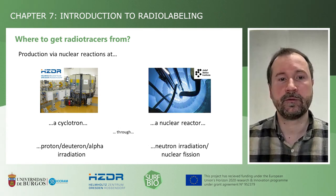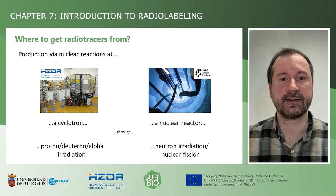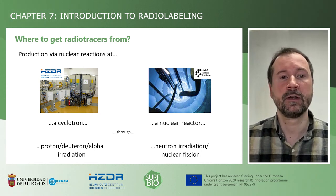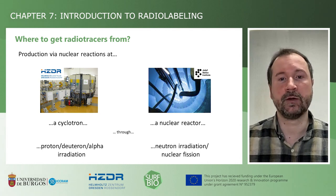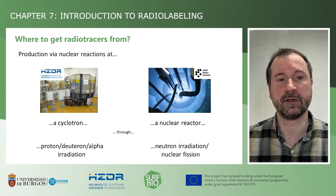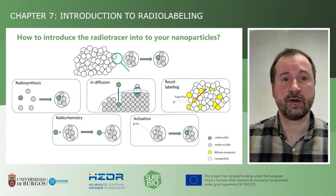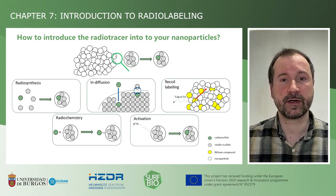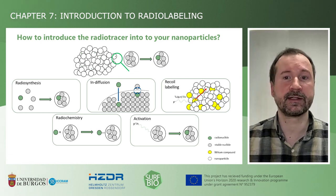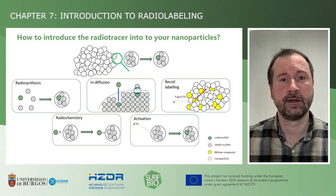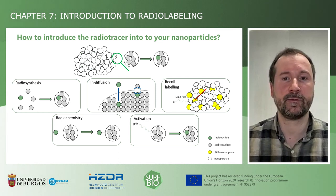Typically, as a user of radiotracers, you won't be involved in these processes, but get the radiotracers from the cyclotron or reactor crew or use commercially available radionuclides that can then be introduced into the nanoparticles to trace them. The introduction of the radiotracer into nanoparticles can be achieved by methods that are as diverse as chemistry itself. Here, I try to break them down into five principles.